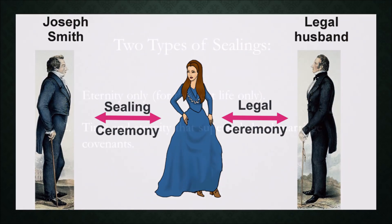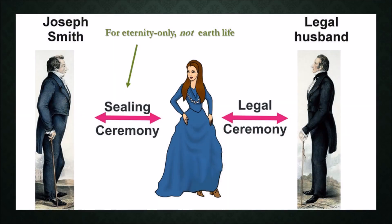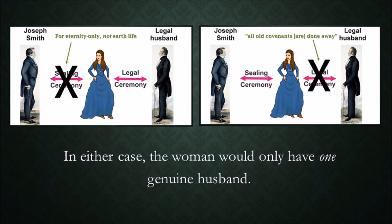Some viewers may not be aware that two types of sealings were performed between Joseph Smith and these women: eternity only, applying after death, and time and eternity, that supersede the legal marriage covenants. In other words, a woman sealed to Joseph Smith in an eternity-only ceremony would not be his wife on earth. And a time-and-eternity sealing ceremony would cause the legal ceremony to be done away, because D&C 22 verse 1 explains, all old covenants are done away in this, the new and everlasting covenant.